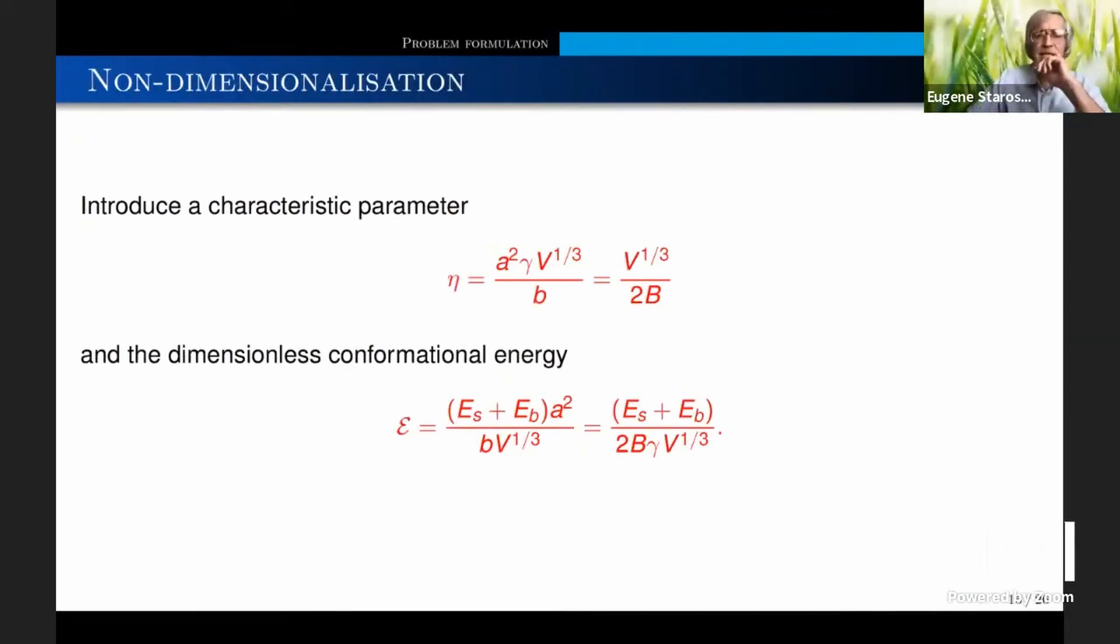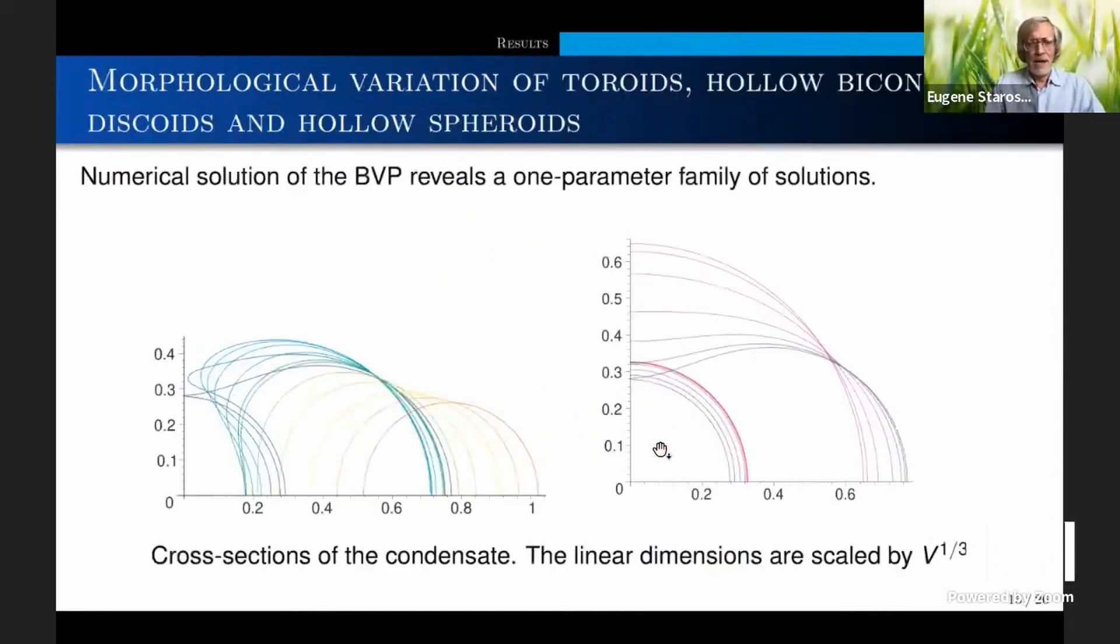I introduce a characteristic parameter. Actually, I follow Abing, Dyck, and other authors. This is a universal parameter. Its meaning is that it basically shows the strength of the surface energy normalized by bending stiffness, gamma over B to the one-third power. And also, the total energy is normalized by this combination. And I solve this boundary value problem.